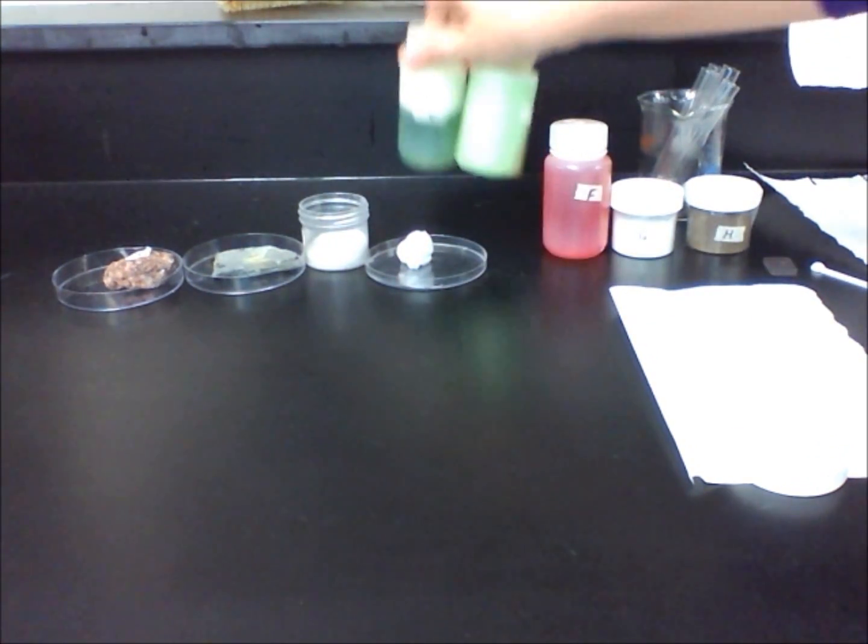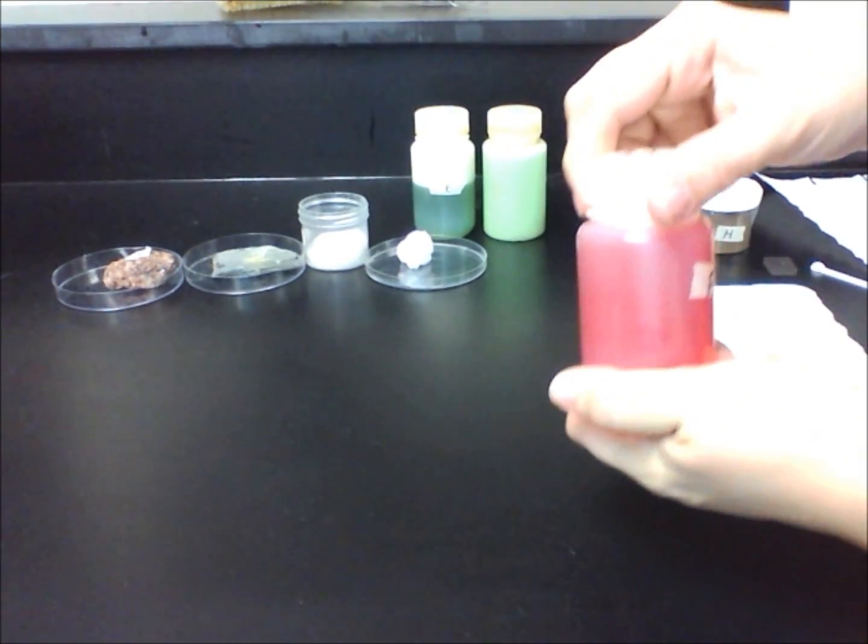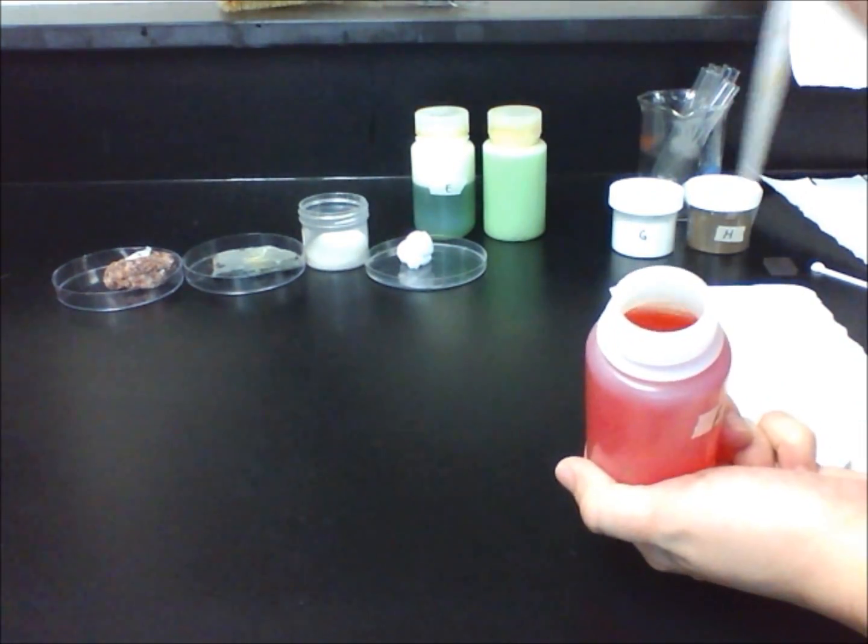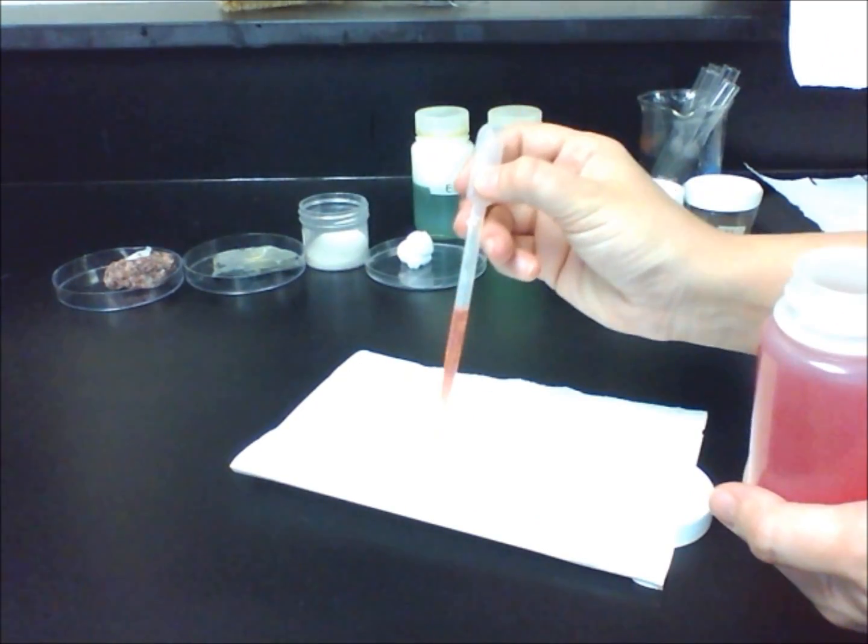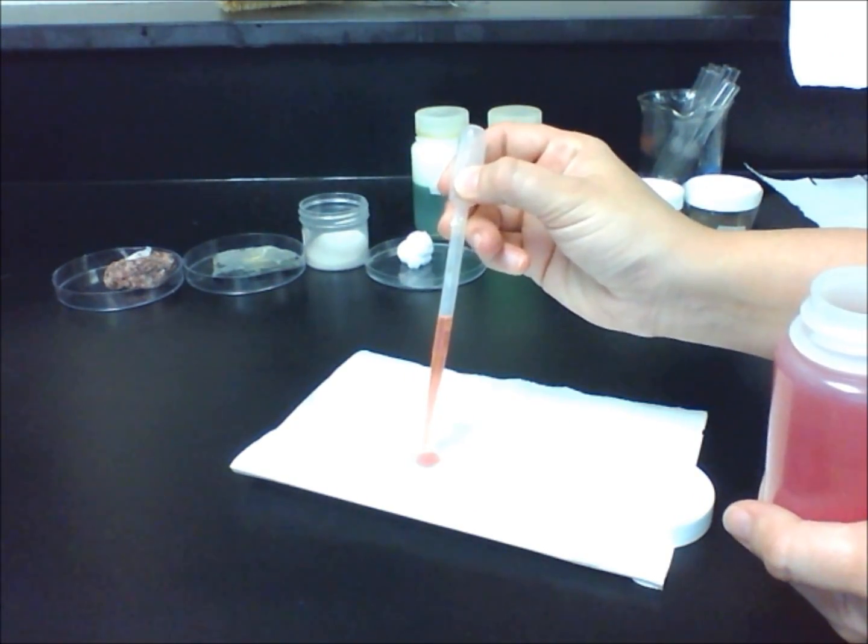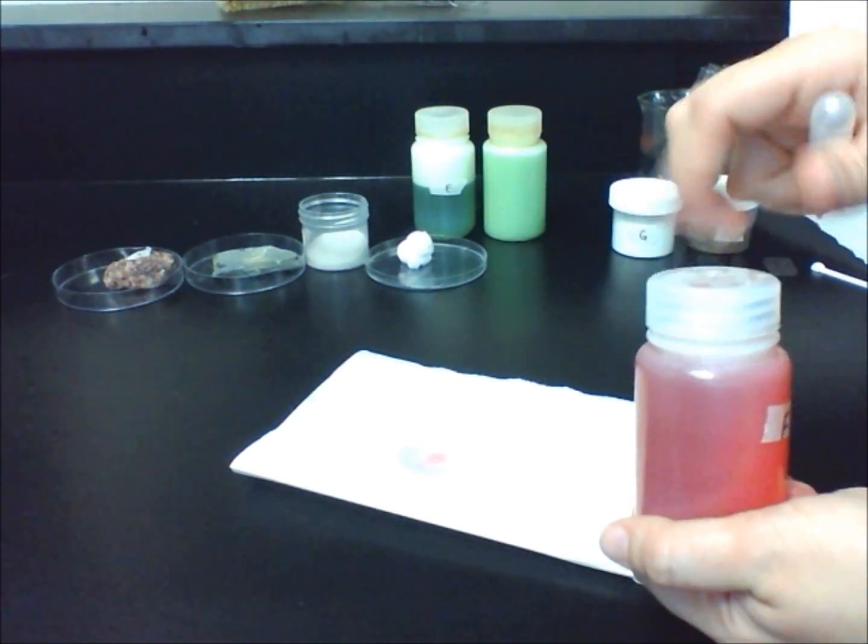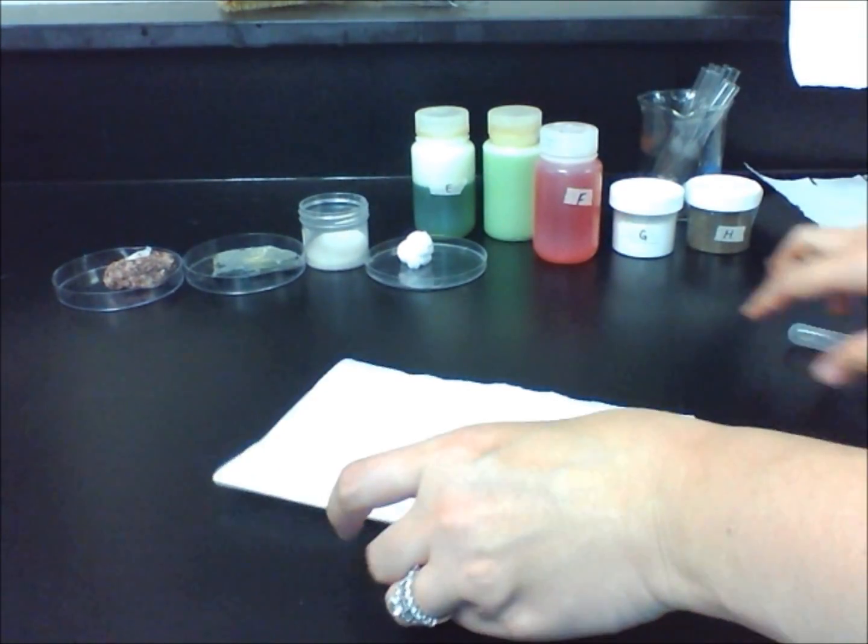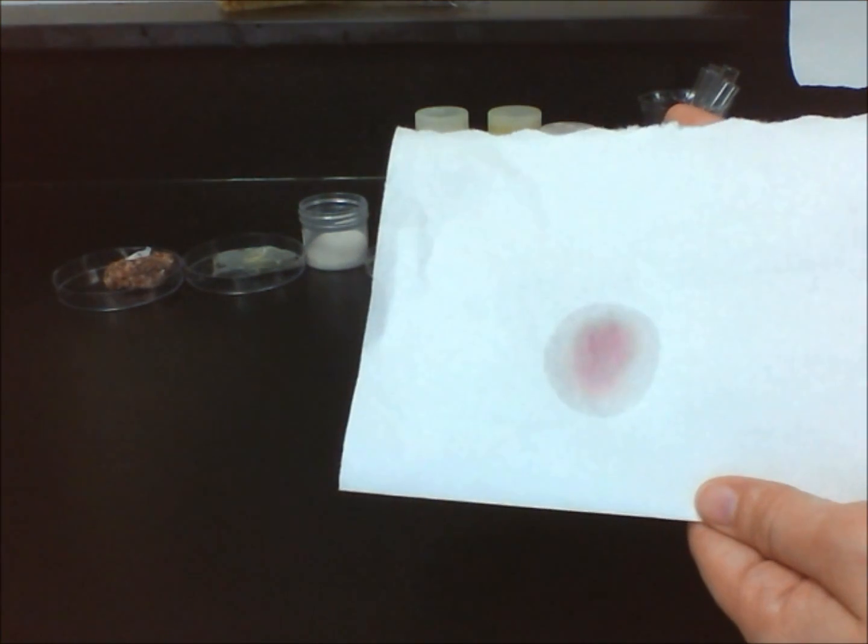Sample F is water and food coloring. When examining it closely, we see that it has a constant composition. However, this is a solution, which is an example of a homogenous mixture. The water is a solvent and the food coloring is a solute, so it's not a pure substance. If we put a single drop of the solution onto a piece of paper with a pipette, the liquid spreads out quickly and then eventually evaporates. A ring of the red food coloring is left behind, which provides evidence that sample F is a mixture.